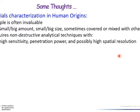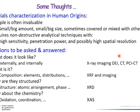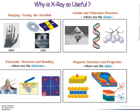Usually, when we look at materials, samples, or fossils, we have four different kinds of questions we want to ask. First, what does it look like — externally and internally? What is it — what is the composition, the elements, their distributions? How are they structured together — the atomic arrangement, the phase structure? And what is the chemistry? These four questions fit very well with X-ray techniques.